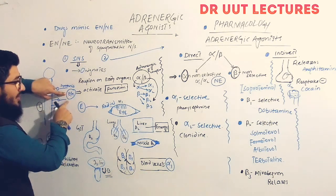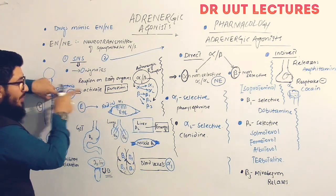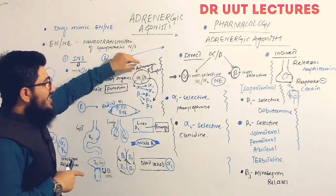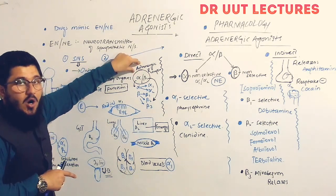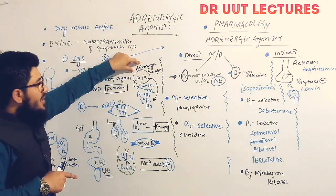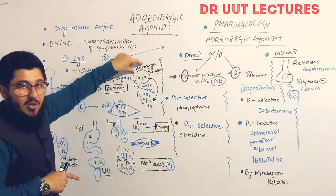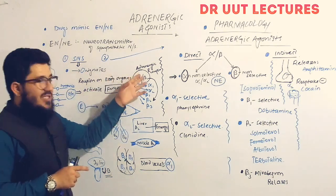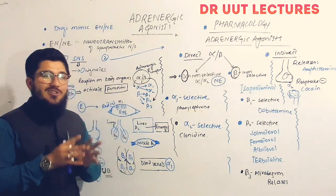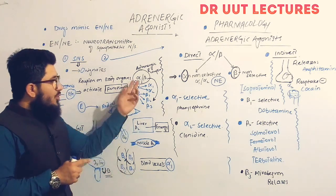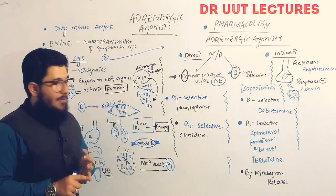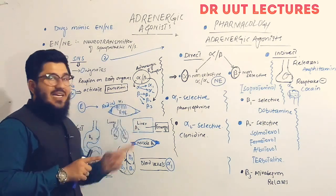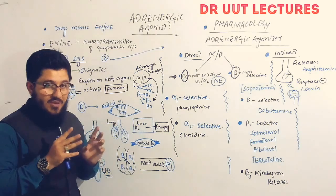The receptors on which epinephrine and norepinephrine bind are the alpha and beta receptors, known as adrenergic receptors or adrenoceptors. They are given this name because they bind to adrenaline and noradrenaline. These receptors are of two types: alpha and beta. Alpha is further divided into alpha-1 and alpha-2. Beta is further divided into beta-1, beta-2, and beta-3.